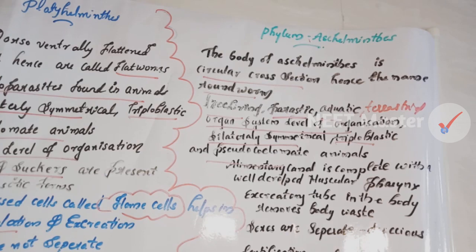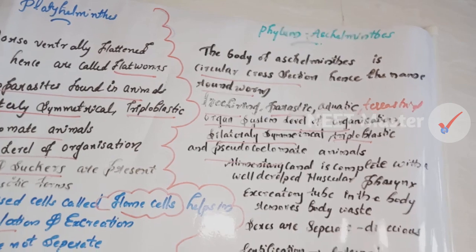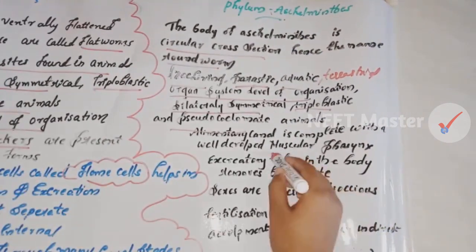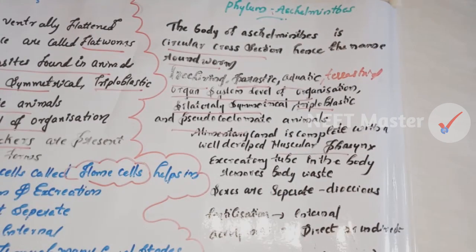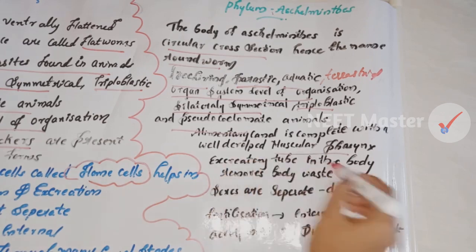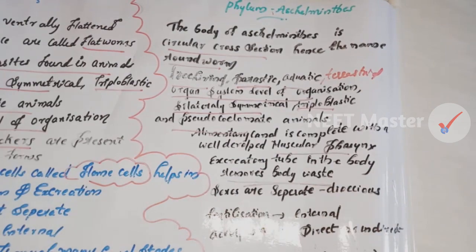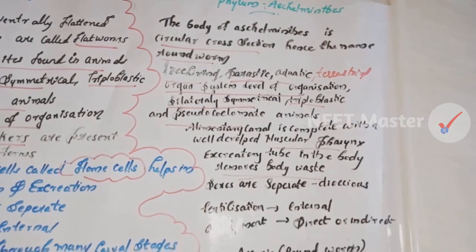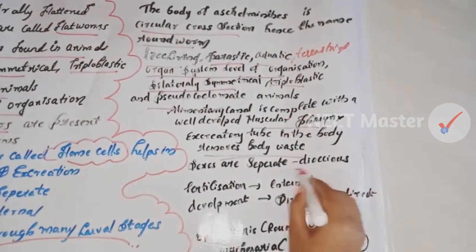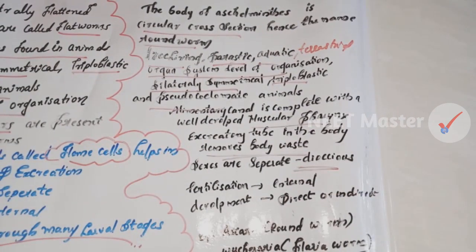Aschelminthes have a well-developed muscular pharynx. An excretory tube removes body waste from the body cavity. Sexes are separate — they are dioecious, meaning males and females are distinct organisms.